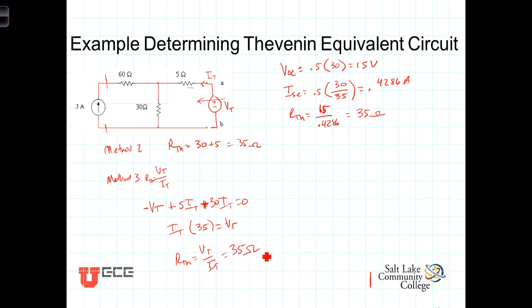So, we get the same results in any one of the three methods. And we can now draw our Thevenin equivalent circuit where V Thevenin is equal to 15 volts and R Thevenin is equal to 35 ohms. Notice that the original circuit had a current source, but the Thevenin equivalent circuit replaces that source and all of the resistance, the effects of the resistance within this circuit are represented by a single voltage source and the Thevenin equivalent resistance.